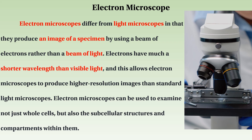Electron microscopes differ from light microscopes in that they produce an image of a specimen by using beams of electrons. Electrons have a measured shorter wavelength than visible light, and this allows electron microscopes to produce higher resolution images than standard light microscopes.